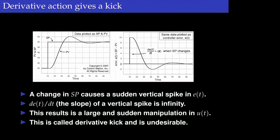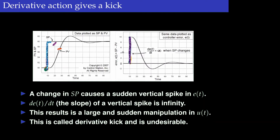Derivative action has its own problems. The first is what is called the derivative kick. At the point when the set point changes, if you plot the error signal — the difference between set point and output — and take its derivative, the value will be very large or effectively infinity in the ideal case, because the error changed suddenly by a very large value. This causes a large kick in the control action.